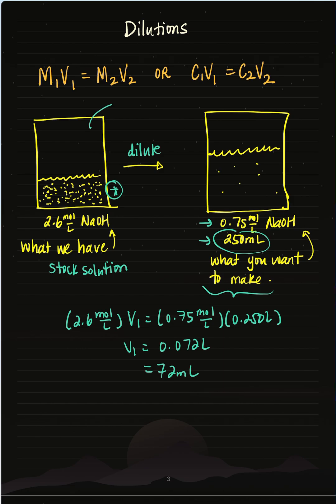That means I need to pour 72 ml of my stock solution. So let me try to visualize it. So this thing that I'm drawing here, this is 72 ml of my 2.6 moles per liter NaOH.